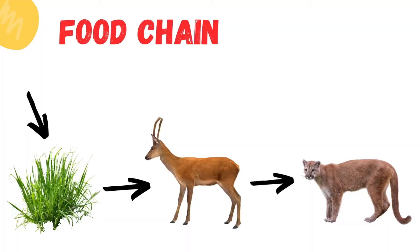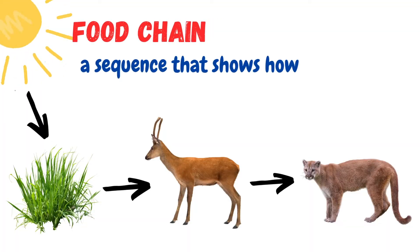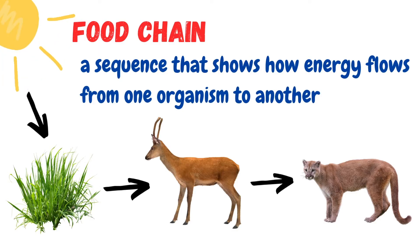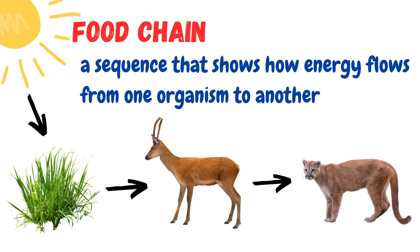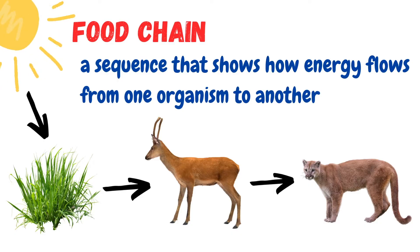A food chain is a sequence that shows how energy flows from one organism to another. The arrows indicate the direction of energy transfer, pointing from the source of the energy to its next destination.